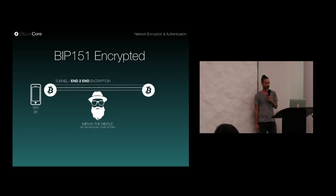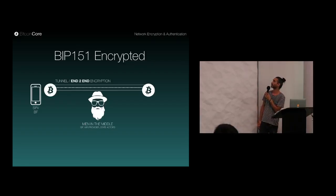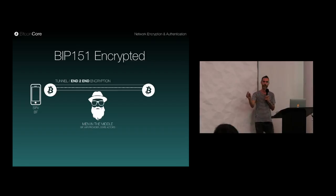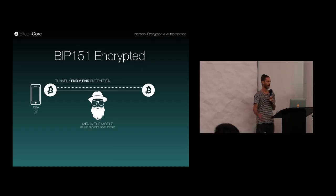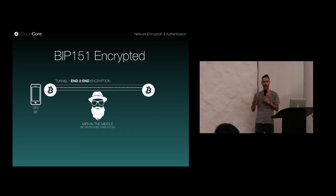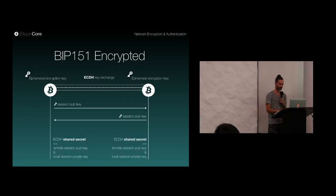That's why BIP 151 was proposed. It's a community proposal, and it allows creating secure channels between peers. It doesn't provide full man-in-the-middle protection — you're still connecting to peers, and if the peer is malicious, you don't know. But at least network authorities no longer have the possibility to intercept and manipulate messages.